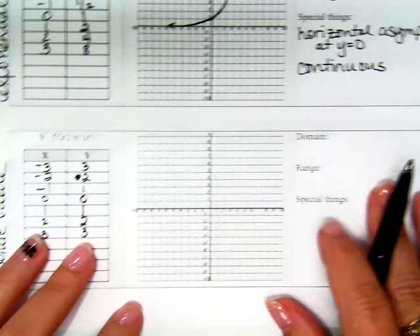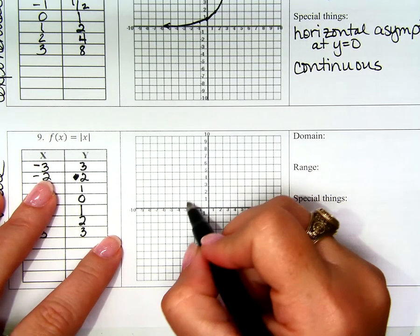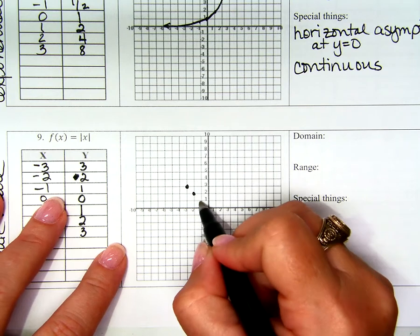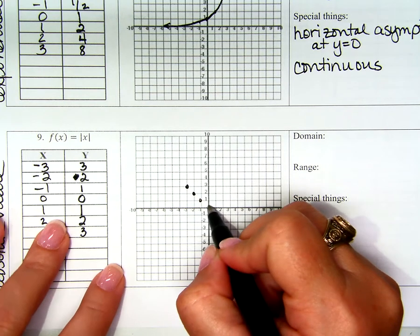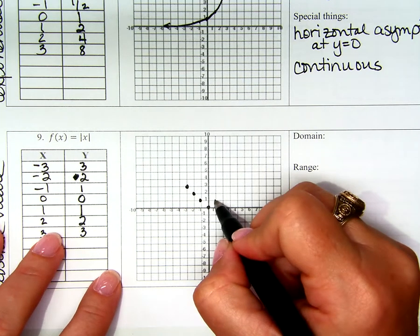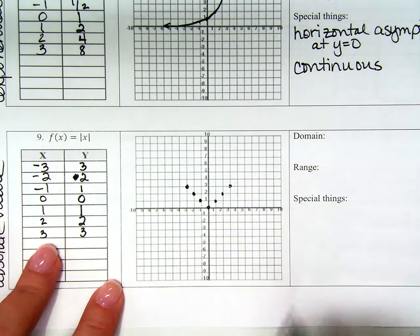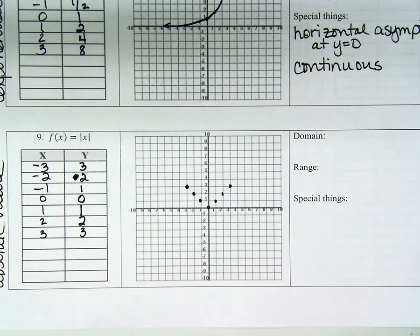Alright. So let's plot these points. Negative 3, 3. Negative 2, 2. Negative 1, 1. 0, 0. 1, 1. 2, 2. And 3, 3. Oh my goodness. It's a V. Almost if this was called absolute value.